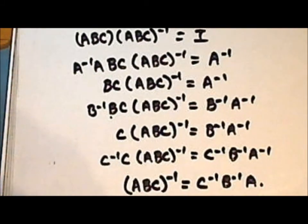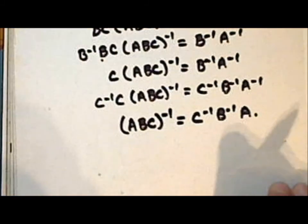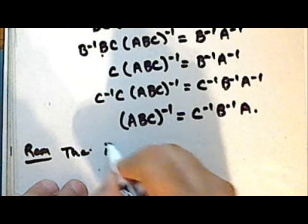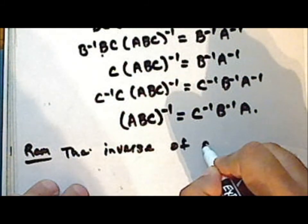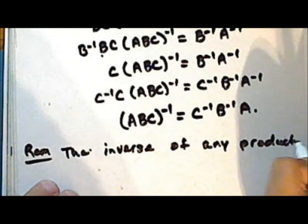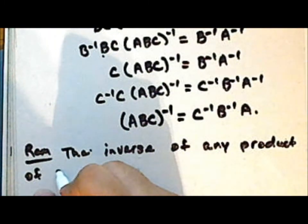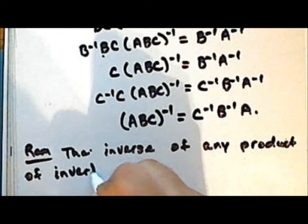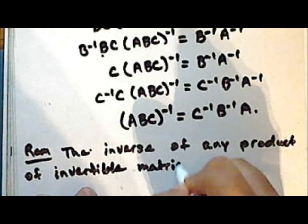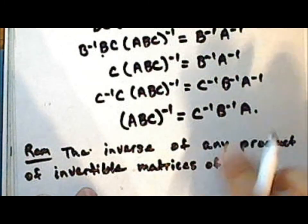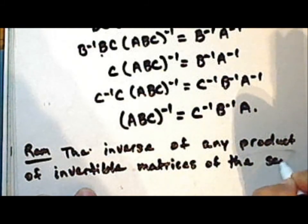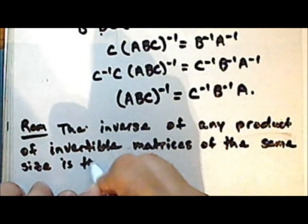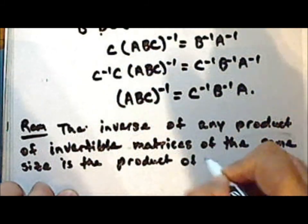Using this method and the theorem just proved, we can demonstrate that the inverse of any product of invertible square matrices of the same size is the product of the inverses in reverse order.